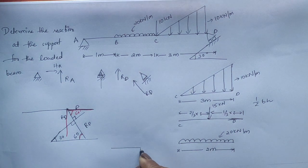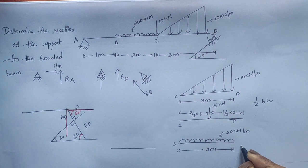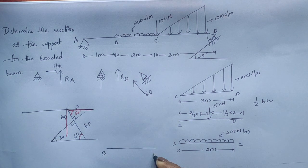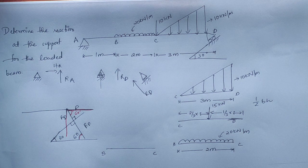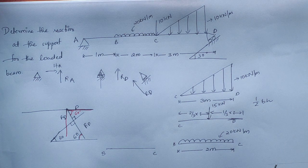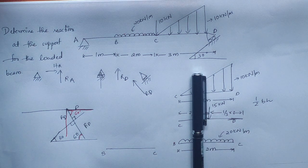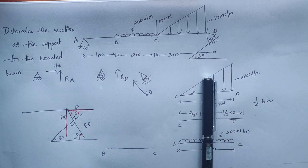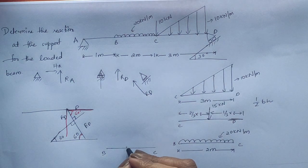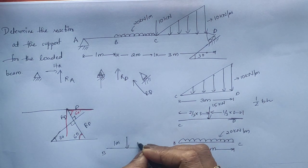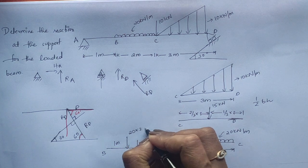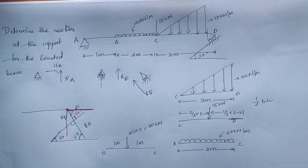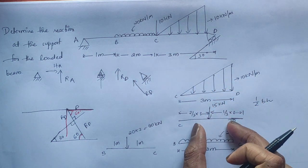Now we convert the UDL on segment BC into a point load. The UDL is 20 kN/m over 2 meters, so the total load is 20 × 2 = 40 kN. Since a UDL is symmetrical, this resultant acts at the center — 1 meter from each end. So the 40 kN load acts at the midpoint of BC.